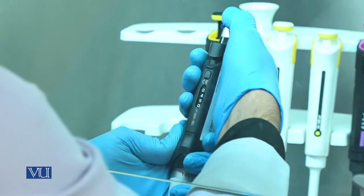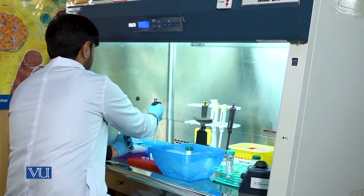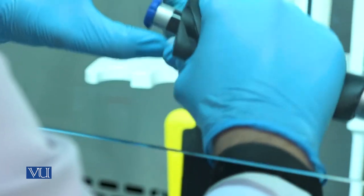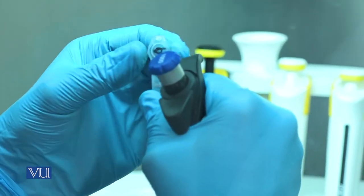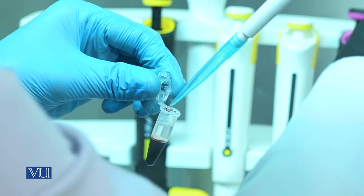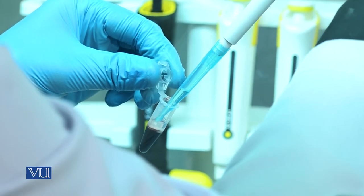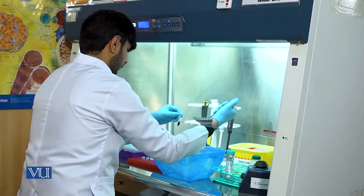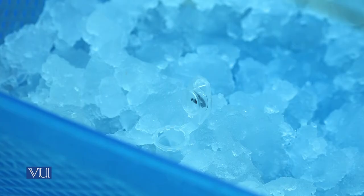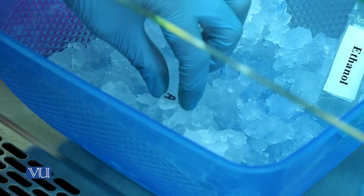Now, we will transfer the aqueous phase to a new eppendorf tube. It should be noted that the tip of the pipette should not touch the interface. You will just pick the aqueous phase that contains the desired RNA molecule.